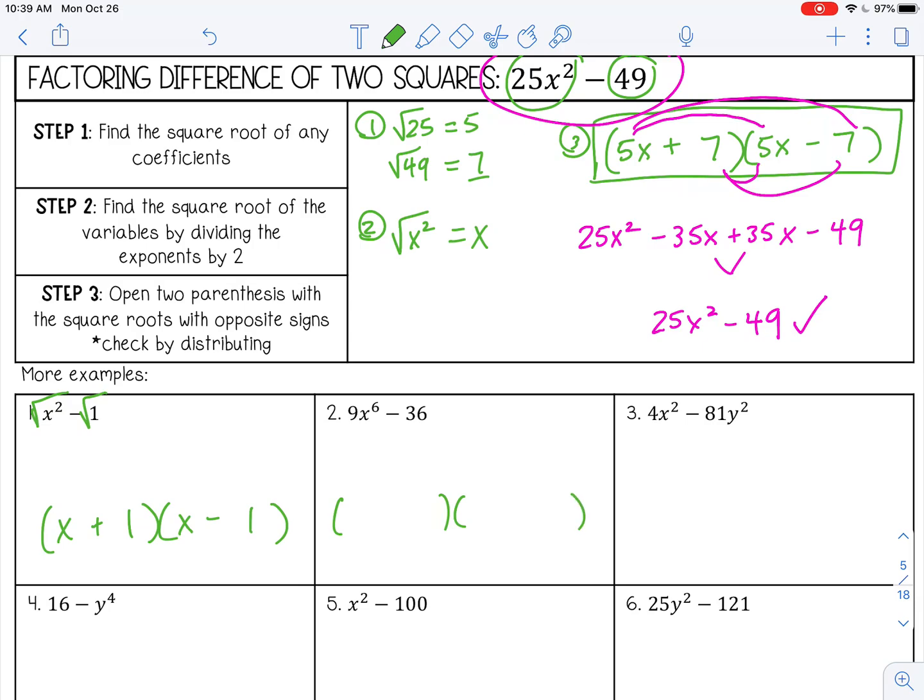All right, let's try a couple more. So the square root of 9x to the 6th. Well, the square root is 3. The square root of x to the 6th, you just divide the exponents by 2, so that would be 3x cubed. And then plus minus the square root of 36 is 6.